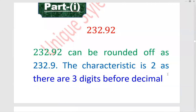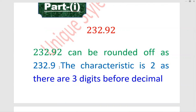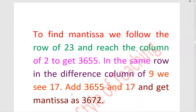232.92 can be rounded off as 232.9. اب آپ دیکھیں اس میں پوائنٹ سے پہلے جو آپ کے پاس ڈیجٹس ہیں وہ ہیں تین۔ ان تھری ڈیجٹس سے آپ ون کو مانس کر دیں تو آپ کے پاس کریکٹرسٹک آ جائے گا۔ (The digits before the decimal point are three; subtract one from three to get the characteristic.)